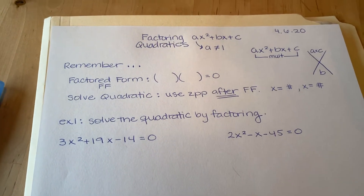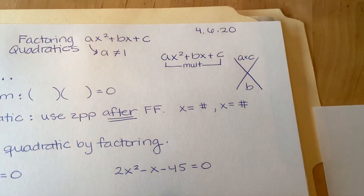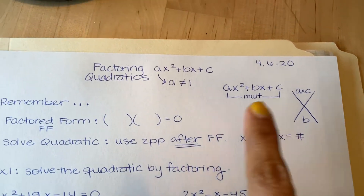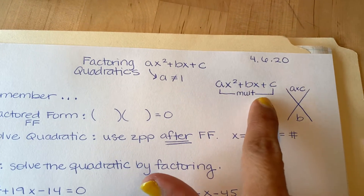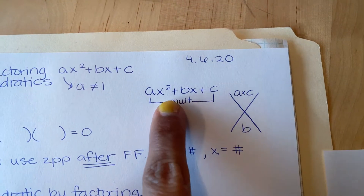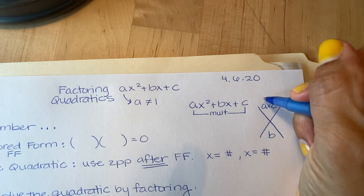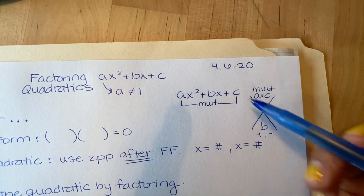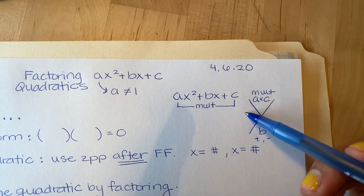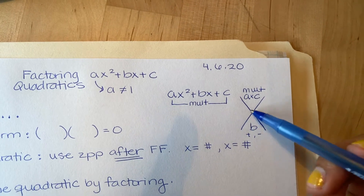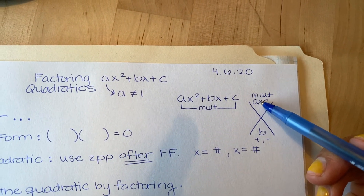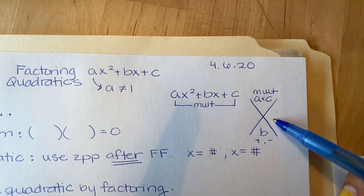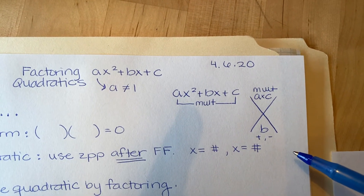Okay, we're factoring where the a value is not one. Remember we're still going to use the Magic X to get our numbers together. So for ax² + bx + c, we're going to multiply a times c whenever the a value is not one — that product goes on top, the north. Then the b value goes on the bottom, and you have to come up with two numbers that multiply to the product and add or subtract to the b value.